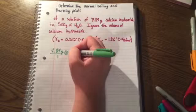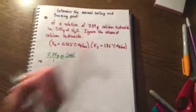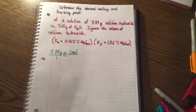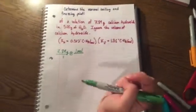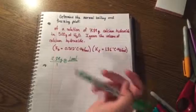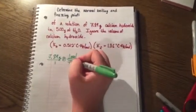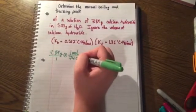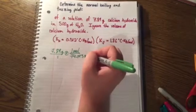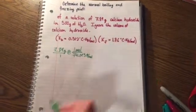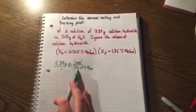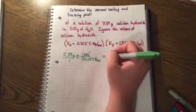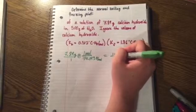If you go to your periodic table, you can calculate what calcium hydroxide molar mass will be and it will come out to 74.093 grams per mole. Dividing 7.89 by this will give you 0.106 mole.